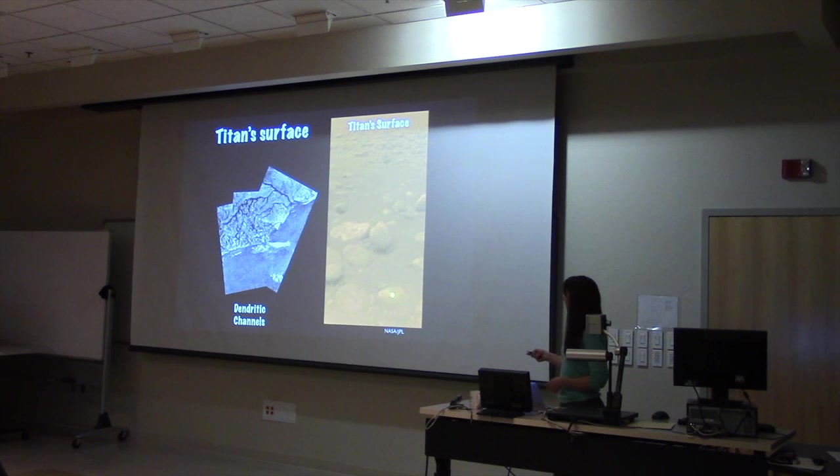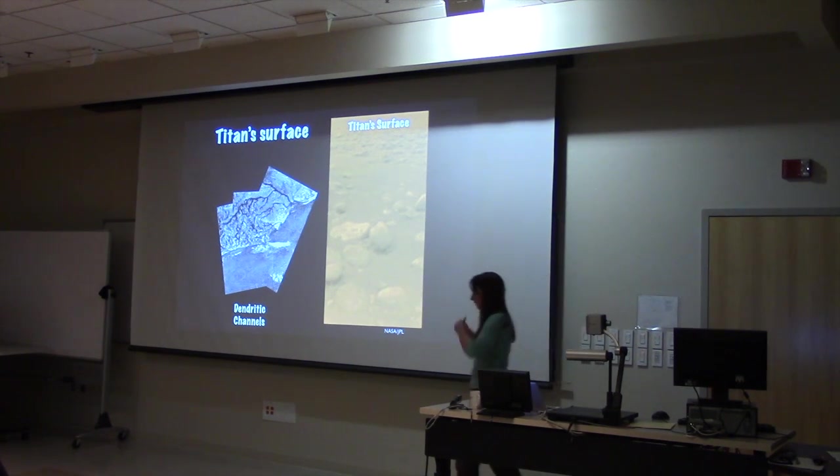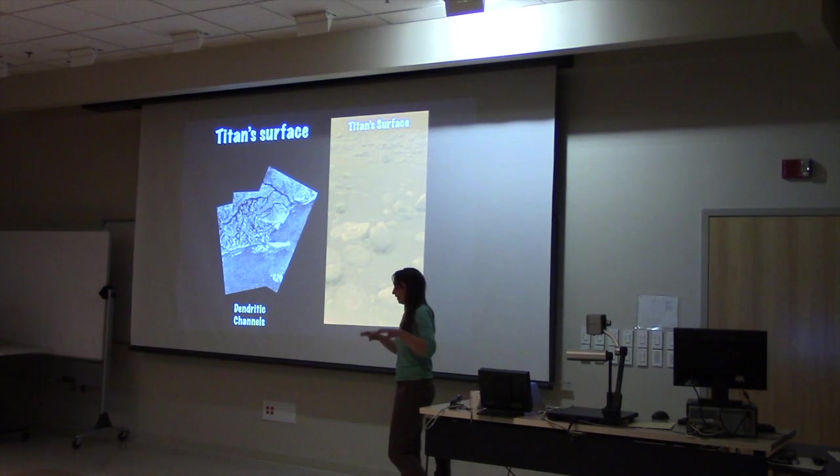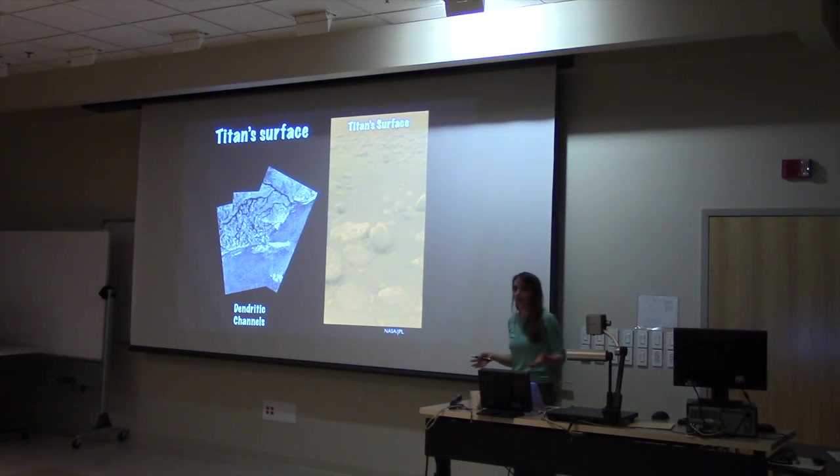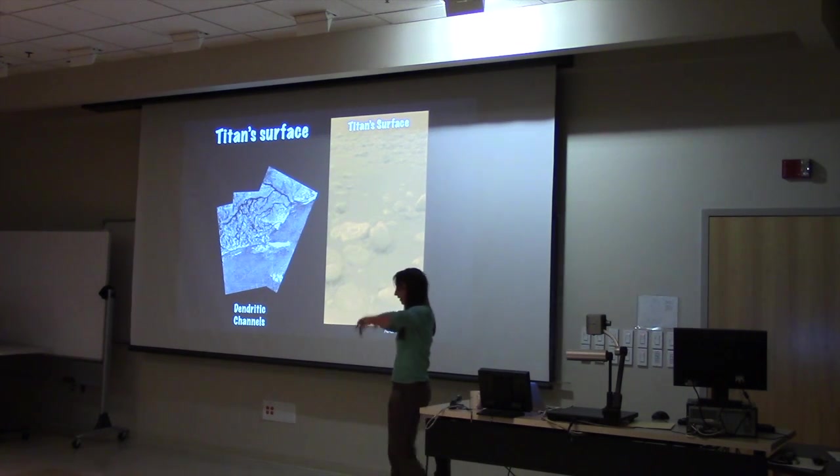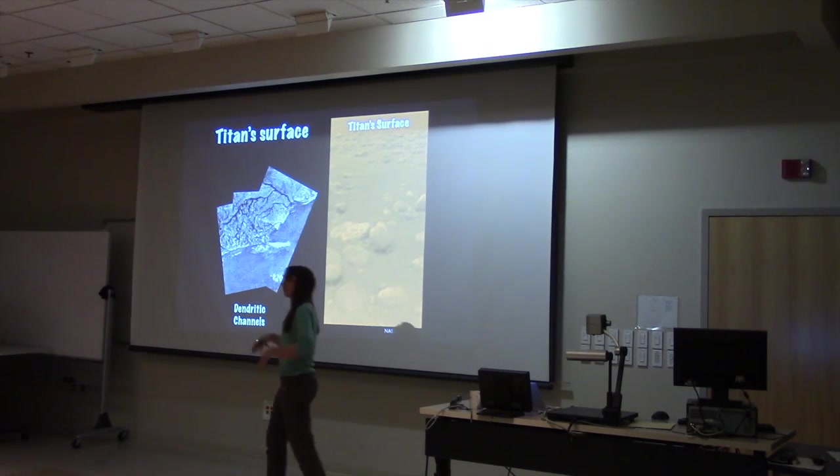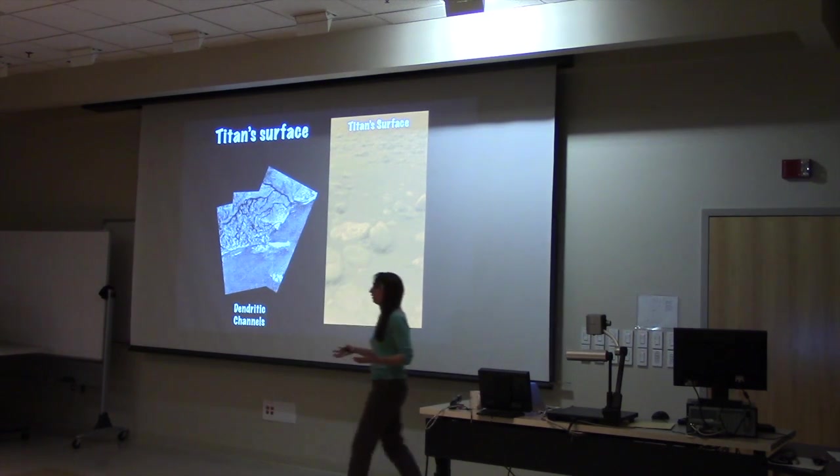Another thing that happened when Huygens landed is that it was a warm spacecraft relative to the surface. And its detectors detected a burst of methane as soon as it landed. You can imagine putting something warm into maybe a muddy, some muddy or wet soil. You would see a burst of water into the atmosphere. The humidity would go up.